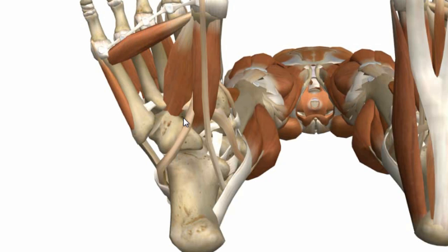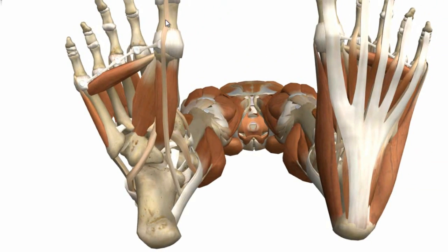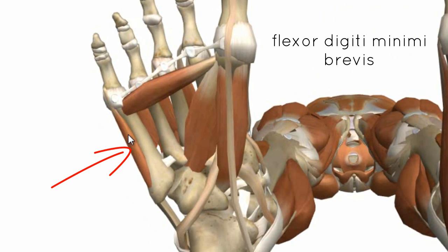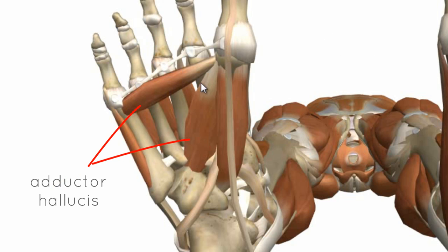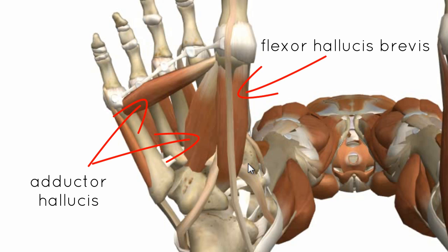The three muscles of the third layer are associated with the little toe and the big toe. For the little toe, there's the flexor digiti minimi brevis. Related to the big toe, you've got the adductor hallucis and the flexor hallucis brevis.